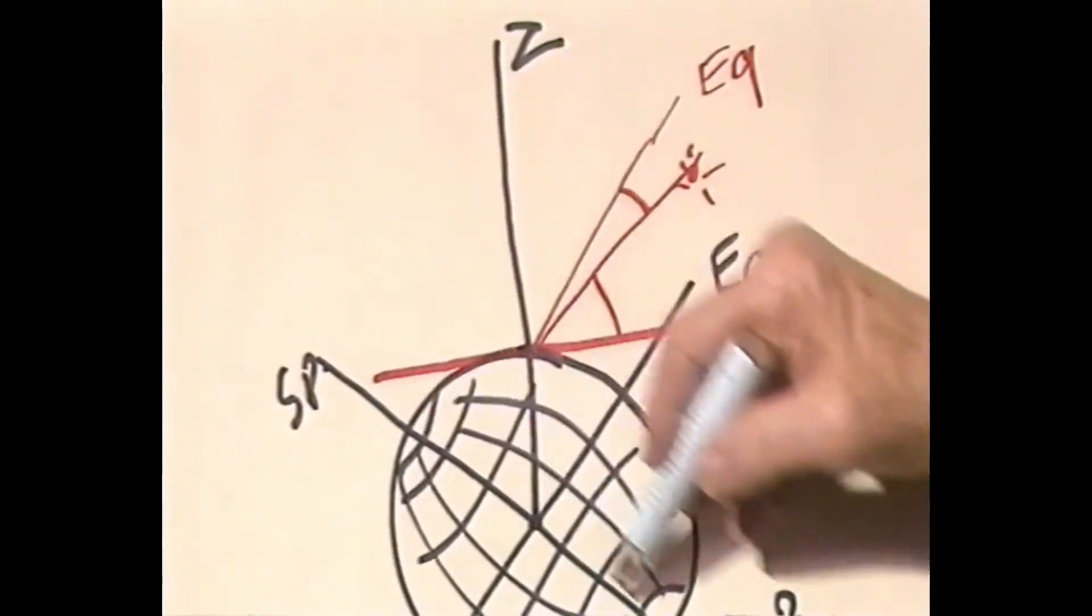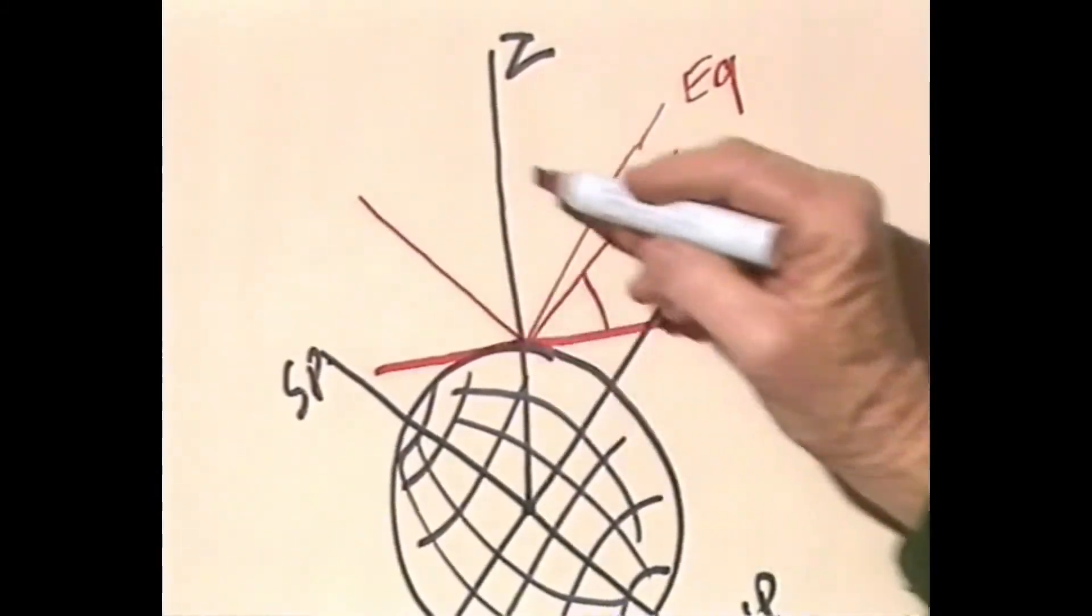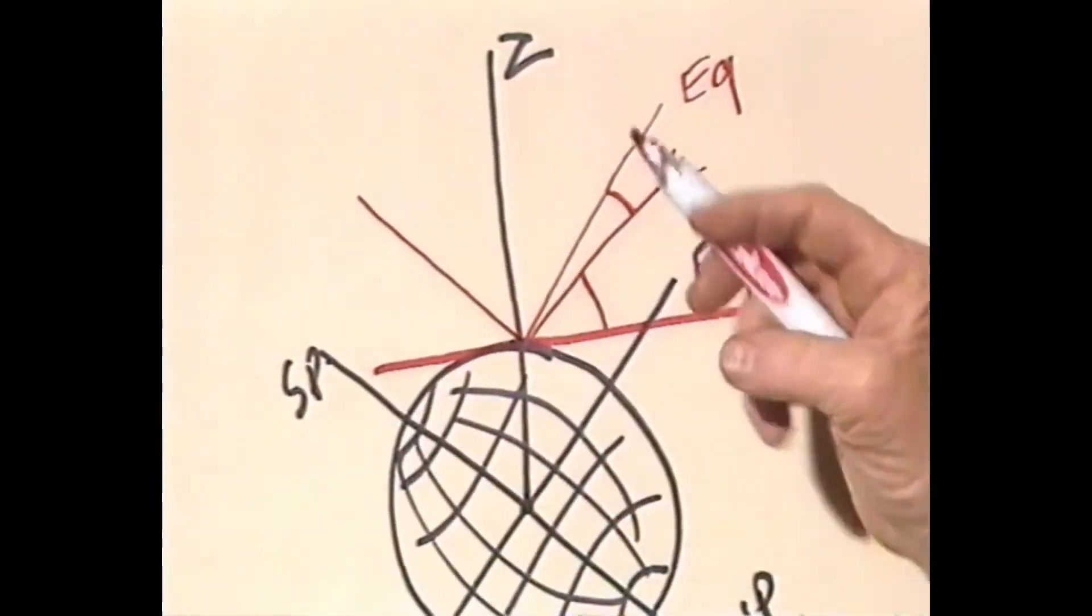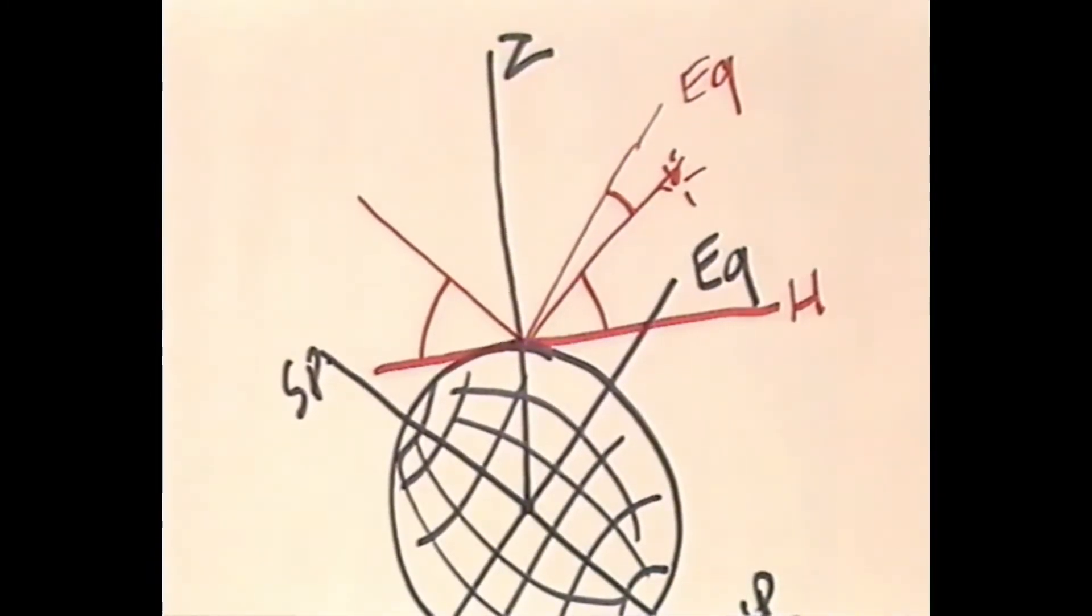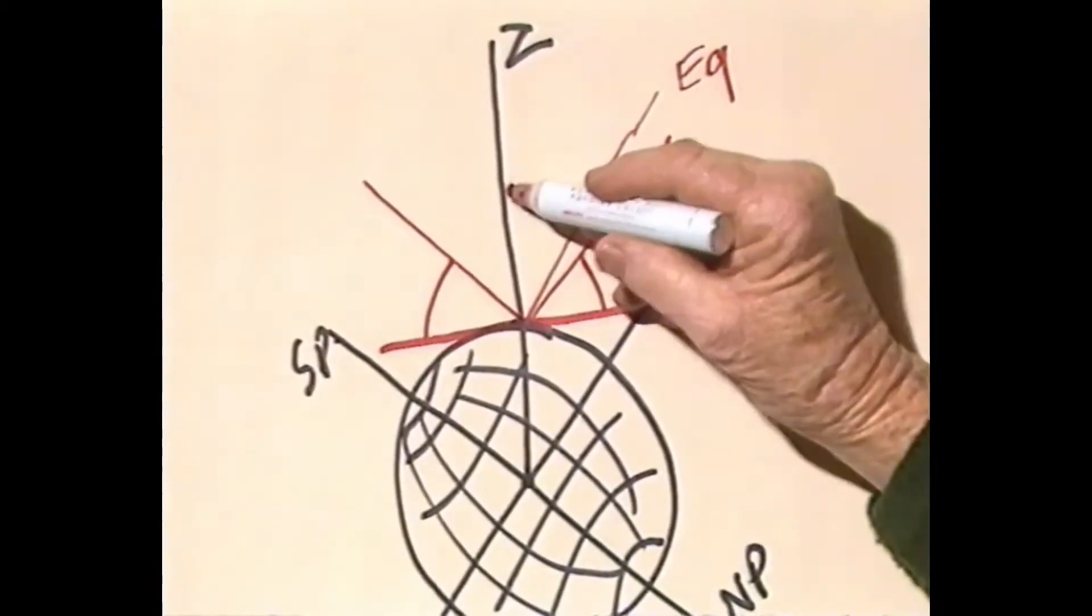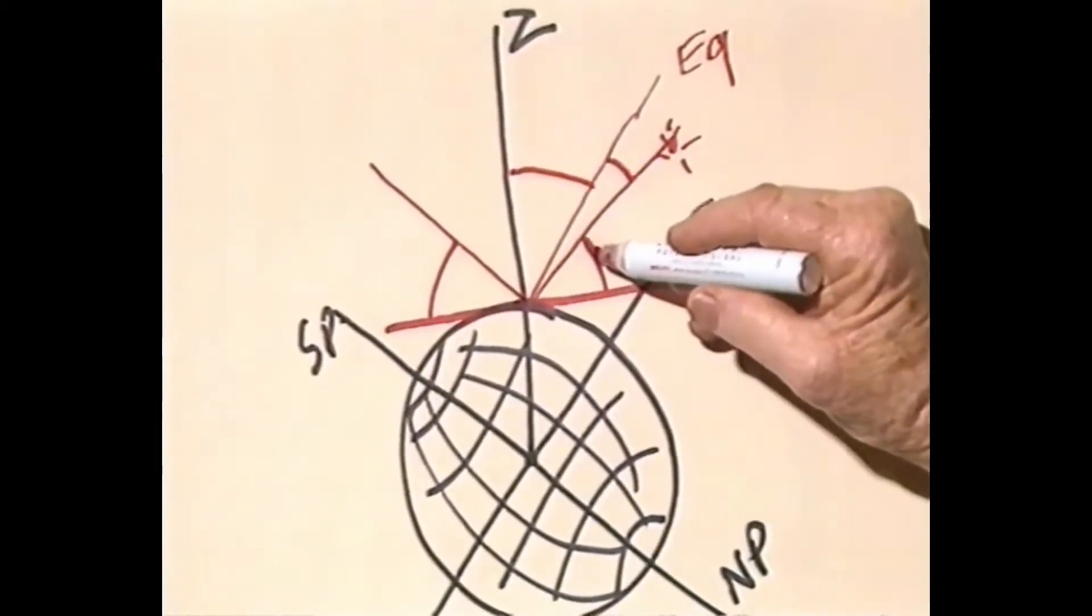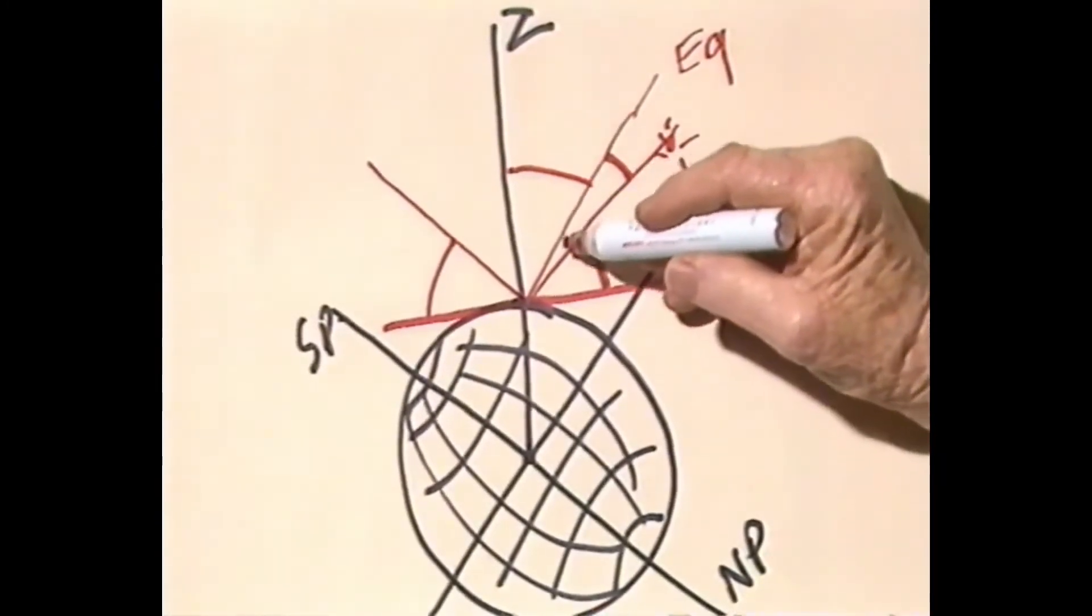The line parallel with the axis of the earth - that's parallel with that. The angle that that makes with the horizontal line is the latitude. Now, that angle is equal to that angle there. If we add the theodolite angle to the nautical almanac angle, we get that.